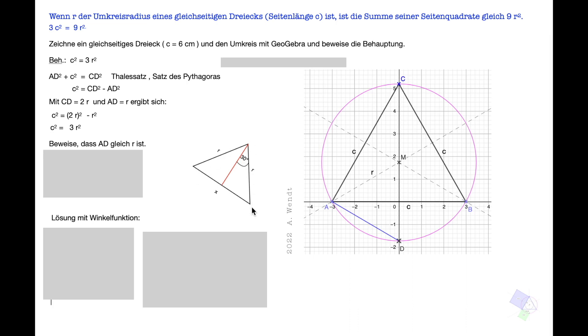Also wir haben hier R, hier R, hier die Seite X. Die wollen wir ja überlegen, ob die tatsächlich R entspricht. Der Winkel ist hier 60 Grad. Durch die Höhe wird der Winkel geteilt. Damit haben wir hier 30 Grad. Und durch die Höhe wird auch die Seite halbiert.